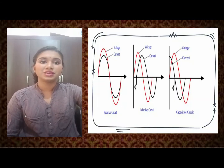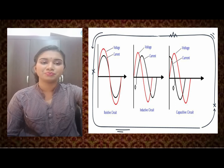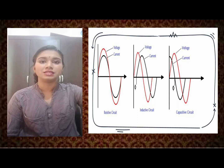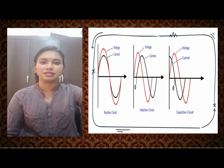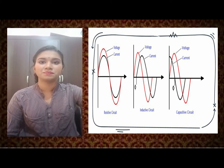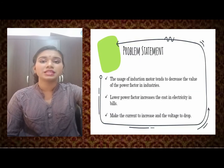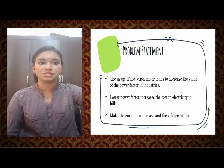Now I will show you three types of circuits related to power factor — the phase difference of voltage and current for resistive, inductive, and capacitive circuits. In a resistive circuit, voltage and current are in phase and the power factor equals one. For an inductive circuit, the voltage leads the current, while for a capacitive circuit, the current leads the voltage. The use of induction motors in industries decreases the power factor, increasing electricity costs and causing voltage drops.